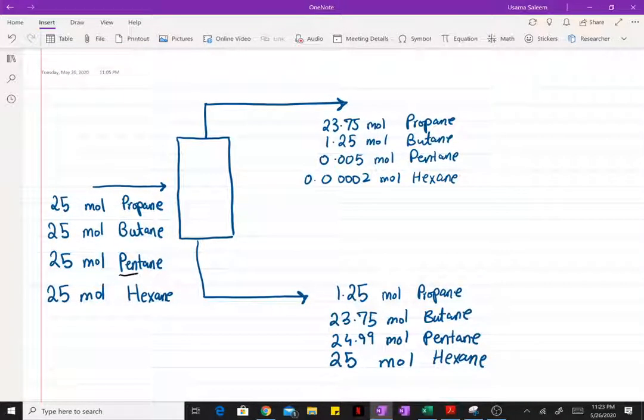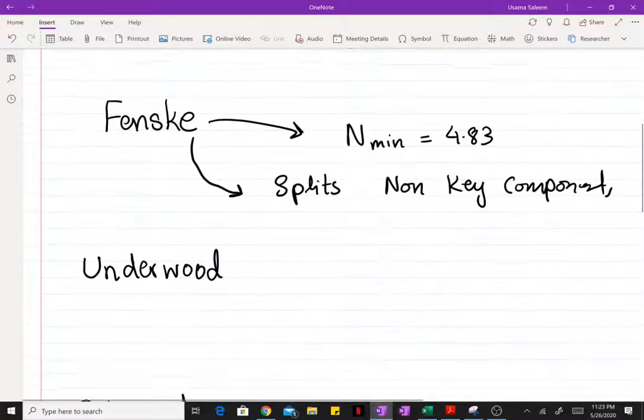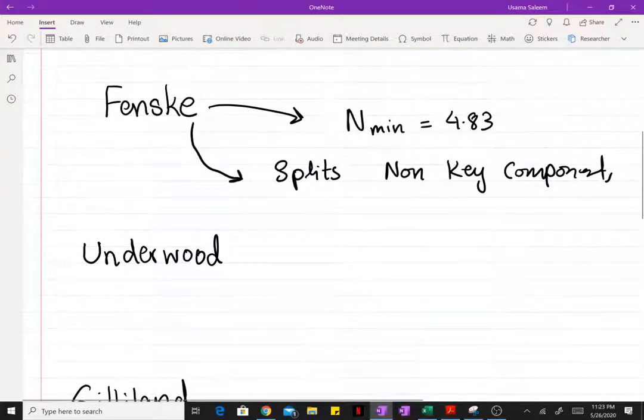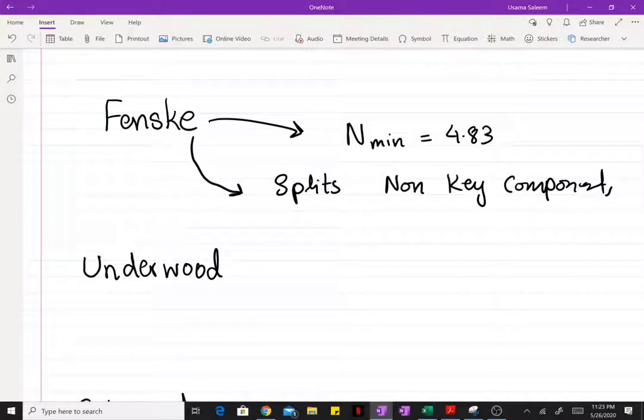The flow rates of pentane and hexane in your bottoms and distillate were found using the Fenske equation. Once the minimum number of stages were found, moving on, once we had the splits, we were able to use the Underwood equation.